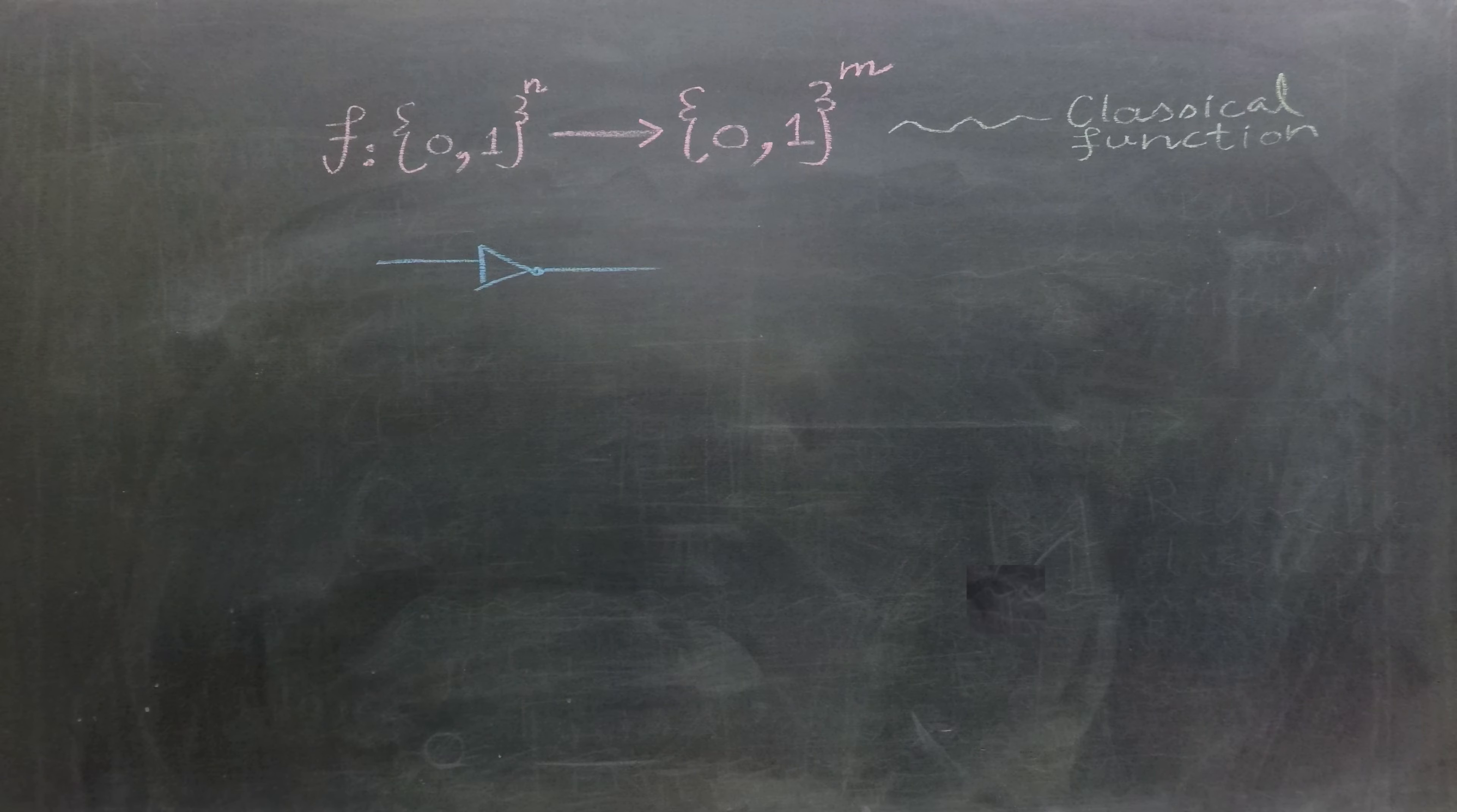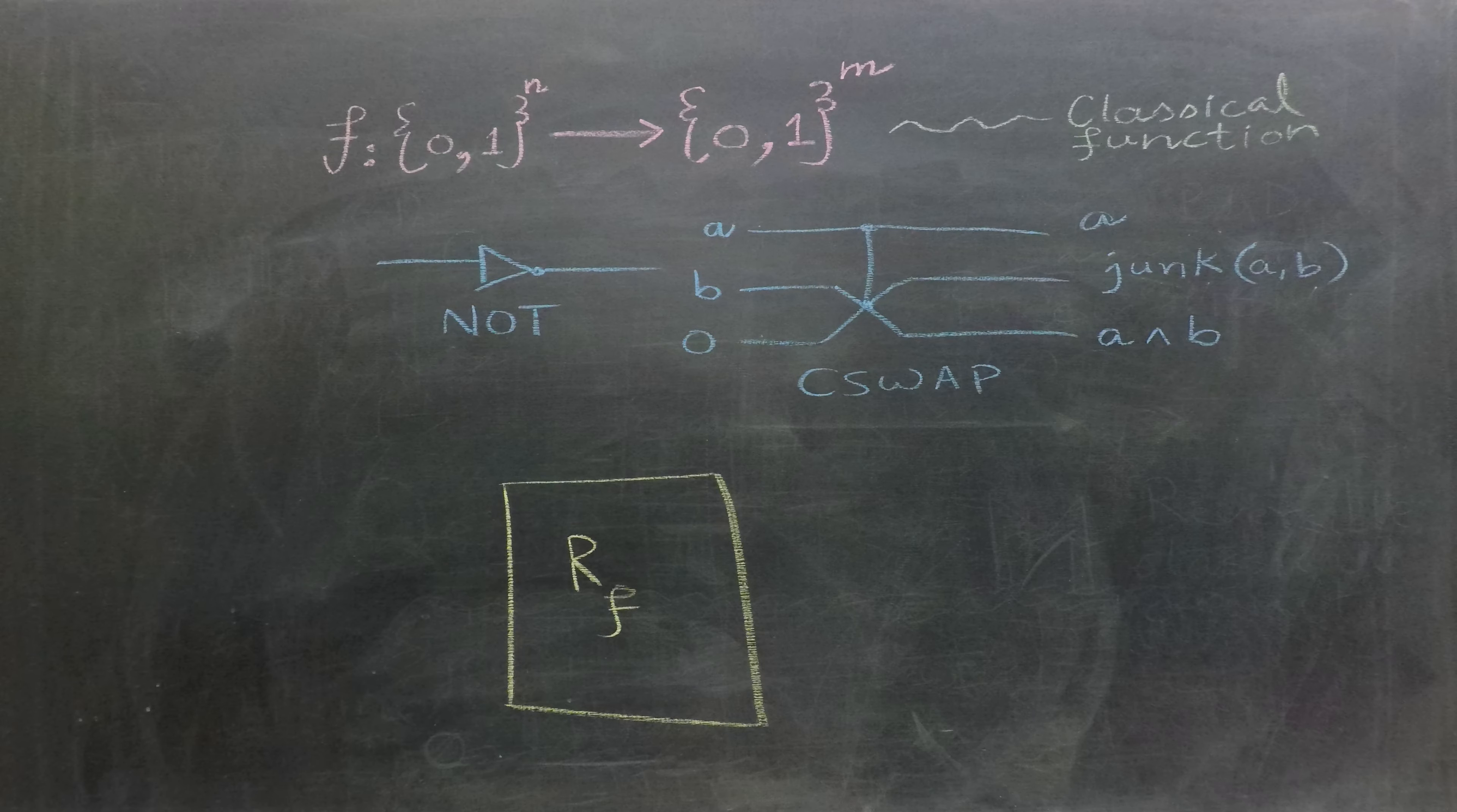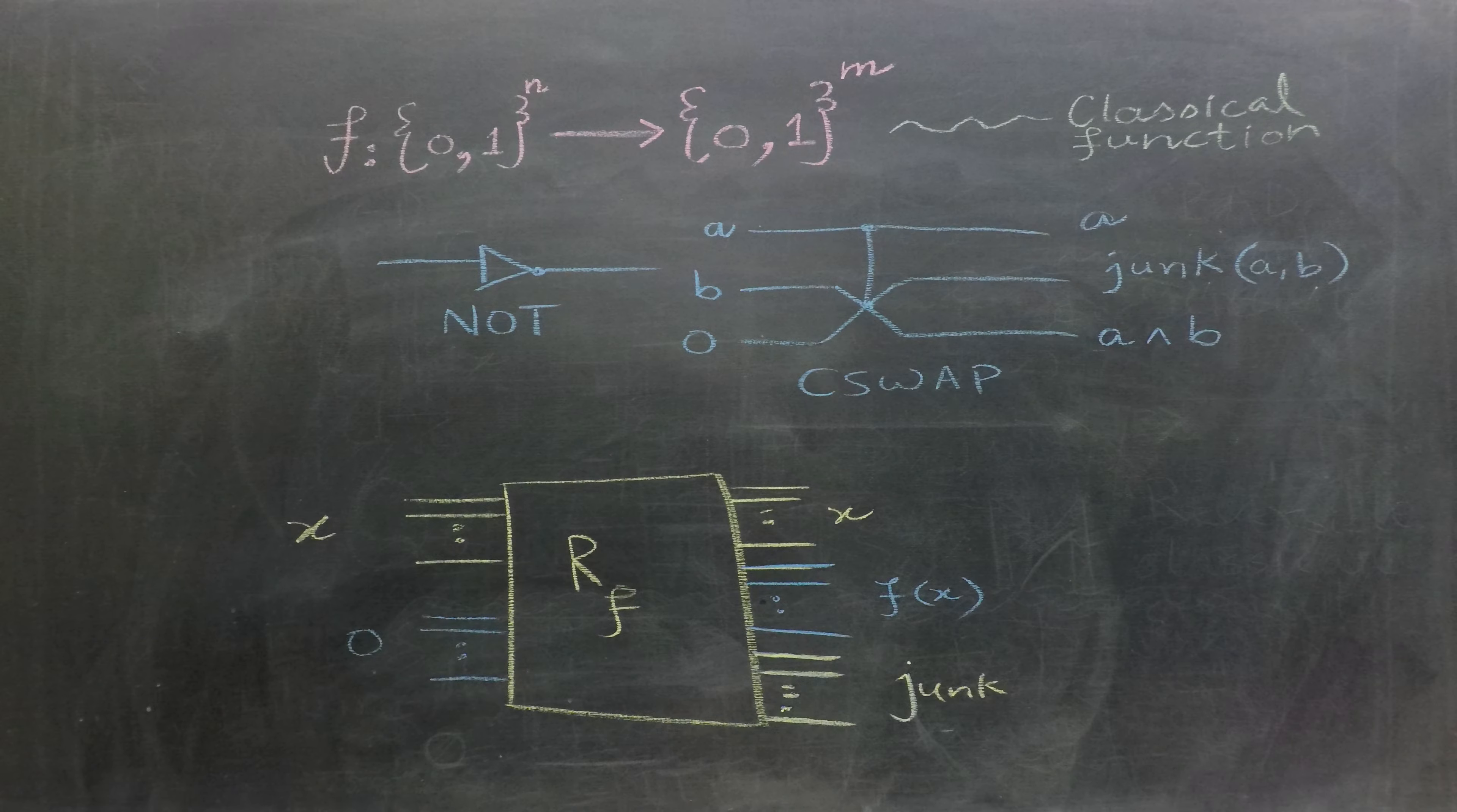Now we have our universal set of classical reversible gates. For instance, we can create a reversible circuit for function f denoted as RF using the reversible NOT and controlled-swap gates. The input for circuit RF will be x along with some 0s. The output will consist of x, f of x, and what we have been referring to as junk, which is also a function of x.